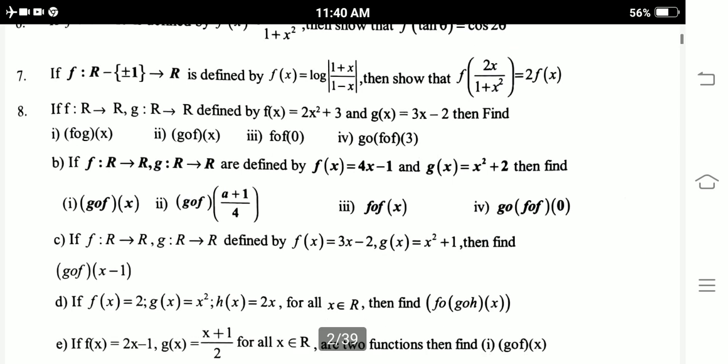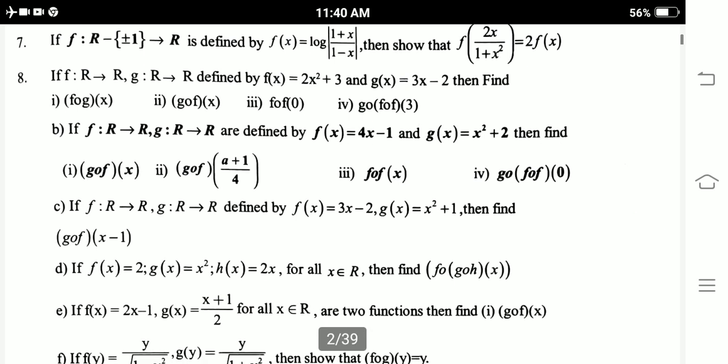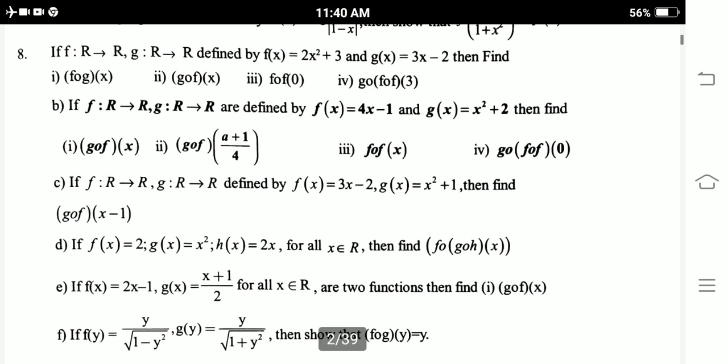Part B: f: R → R, g: R → R defined by f(x) = 4x - 1, g(x) = x² + 2, then find (fog)(x), (gof)(1/4), (fof)(x), (gof)(0).